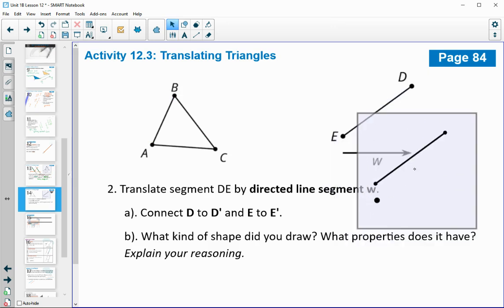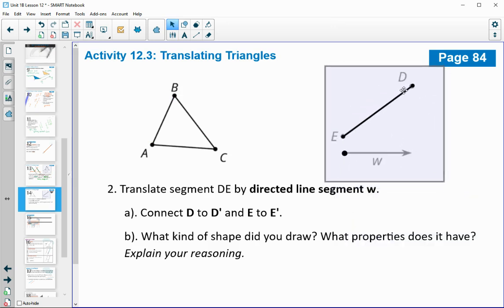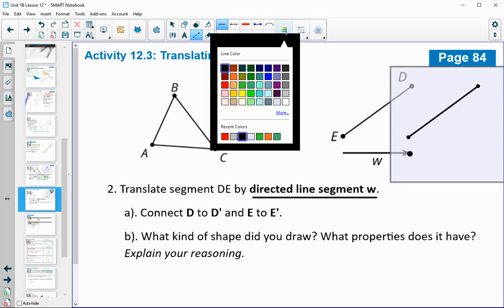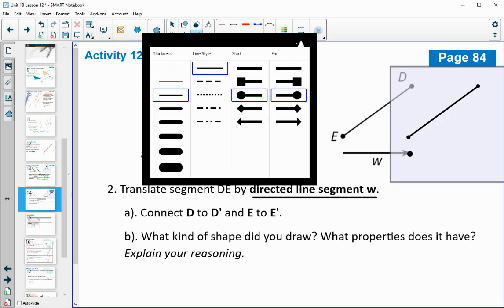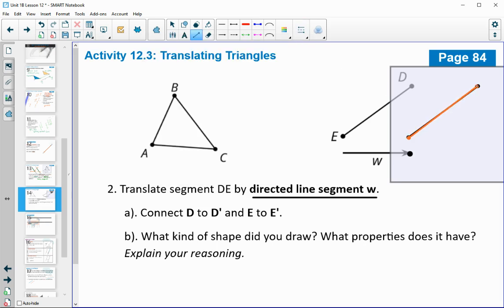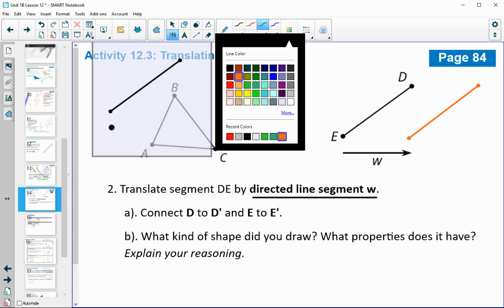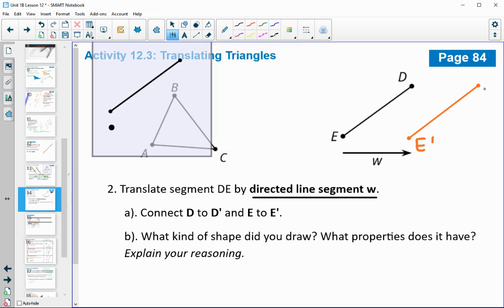All right. Then on this next one, you'll see that I have tracing paper here again. I've traced segment ED. And now we're going to be translating DE along the directed line segment W. So we see W written there. And you'll see that I just put a point at the end of W. So that's going to help me be able to know how far to move my tracing paper. I'm going to take this point and I'm going to move it to the end of that vector or that directed line segment. And then I'm going to draw in my new segment on my student workbook and then label it. So then this would be E prime and this would be D prime.